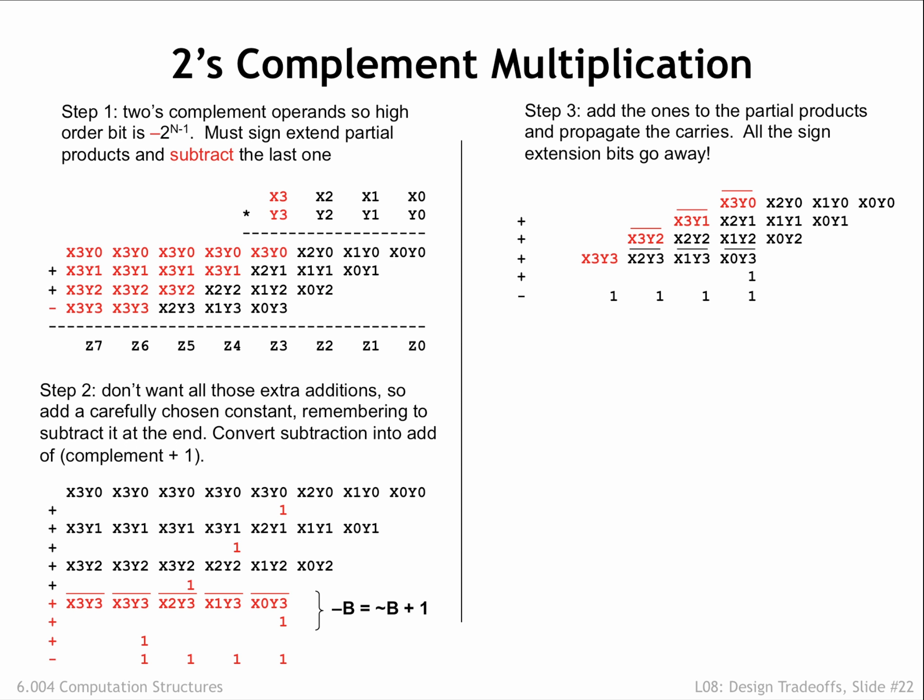On the other hand, if that partial product is negative, x3y0 is 1 and all the sign extension bits are 1. Now when we add a 1 in that position, we complement the x3y0 bit back to 0, but we also get a carryout.